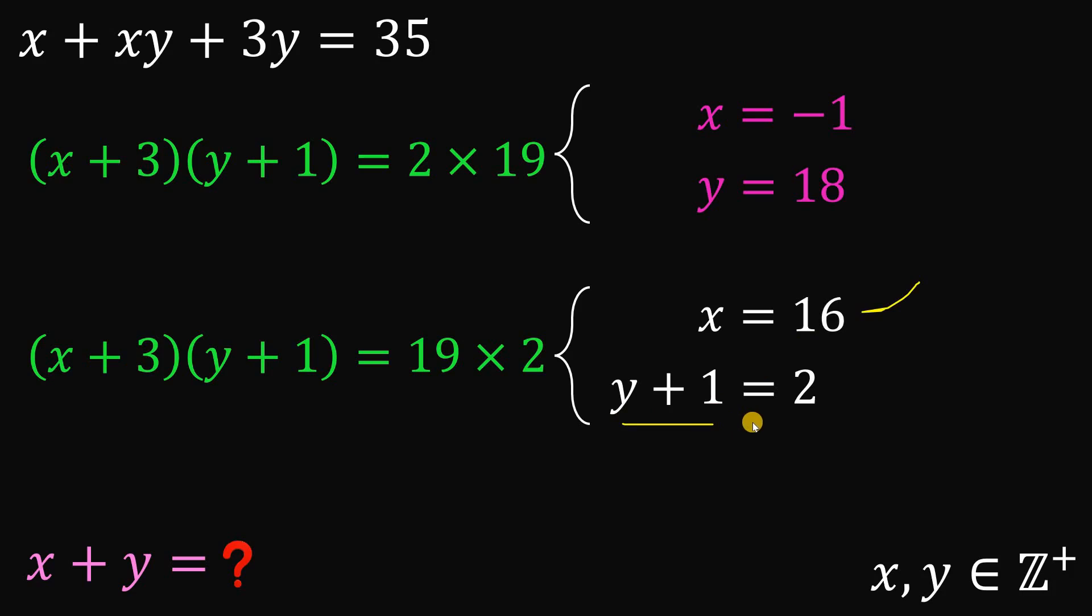And solve for the value of y, subtract 1 on both sides. 2 minus 1 is 1. Both x and y are positive integers, so this case is considered or accepted.